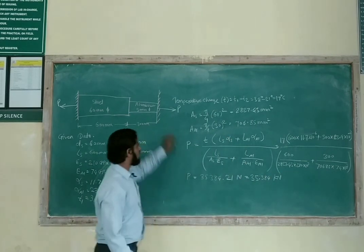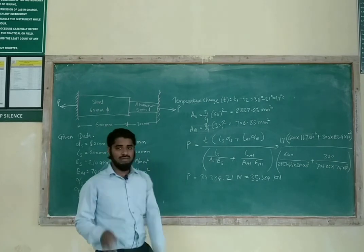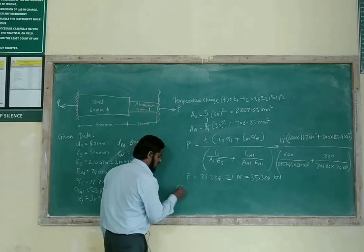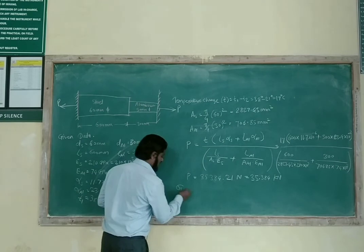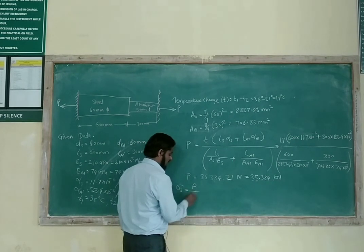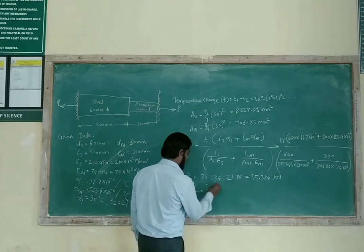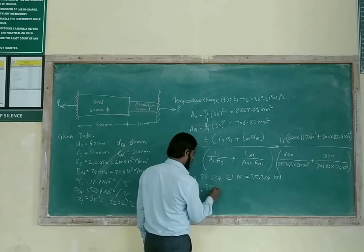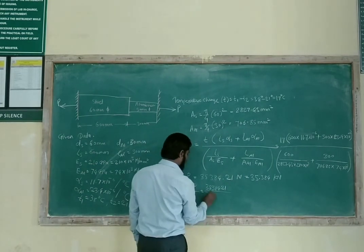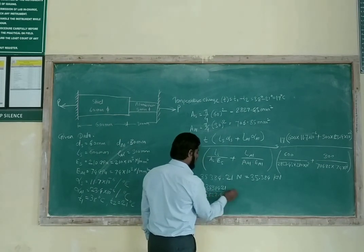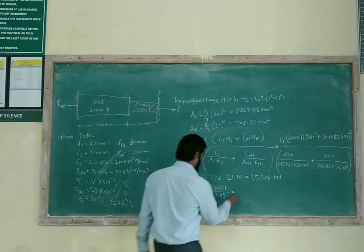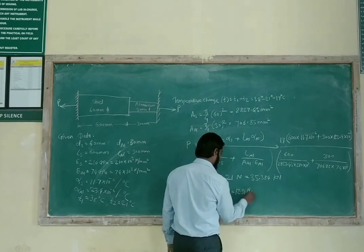This is the force exerted by the fixed end supports. The stress in steel σ_S = P / A_S = 35,384.21 / 2827.43 = 12.51 N/mm². We also need to determine the nature of the stress.